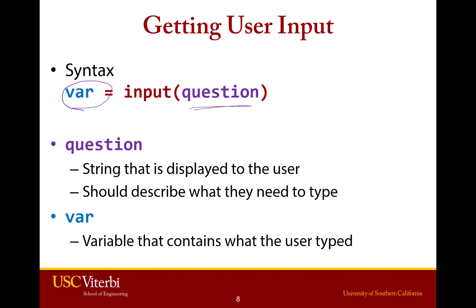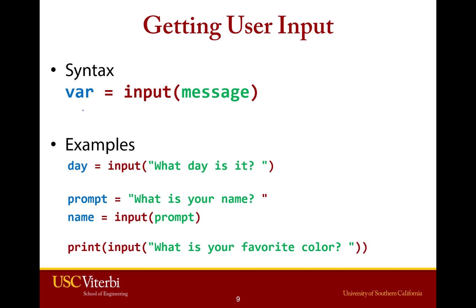The syntax of the input function is similar to print in that you say input with parentheses and then some sort of message that the user will see. But the difference is now we get to store whatever the user types in into a variable. You say variable equals input. For example, we could say day equals input('What day is it?'), and whatever the user types in gets stored in the day variable. You can also store the prompt in a variable and pass that variable into input.